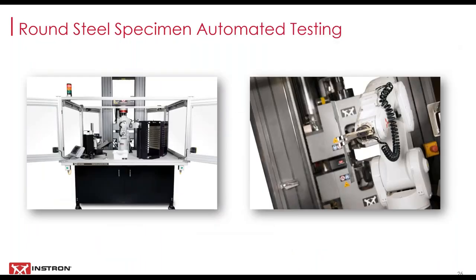The last question was about testing round steel specimens using an automation system. This is fairly common and the setup is very similar to what it would take to test flat dog-bone specimens. The only differences are the specimen storage racks, robot fingers, and tensile grips, which will all have a v-shape to hold round specimens as opposed to a flat surface for flat specimens. Aside from that, testing round specimens or flat dog-bone specimens is essentially the same.